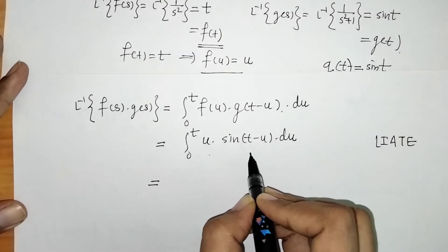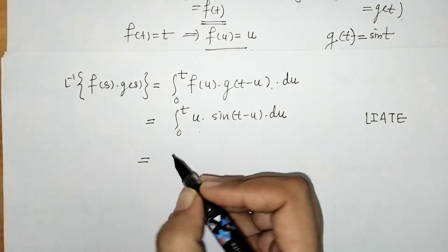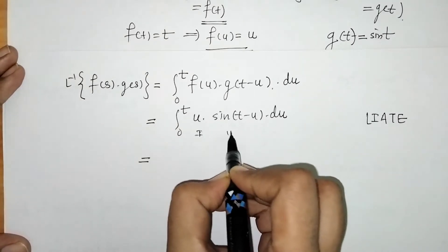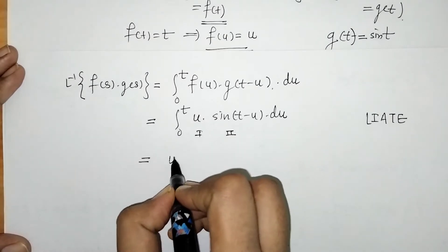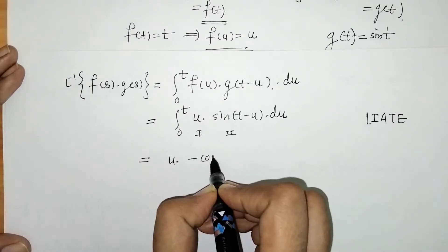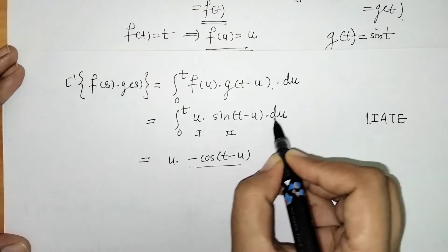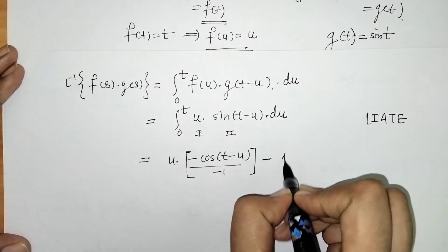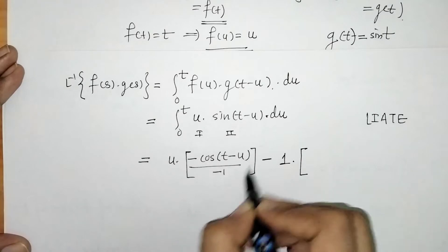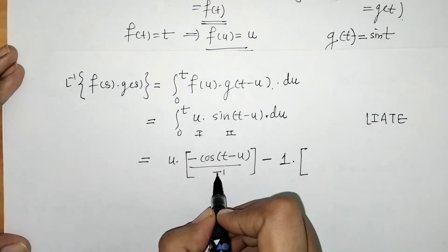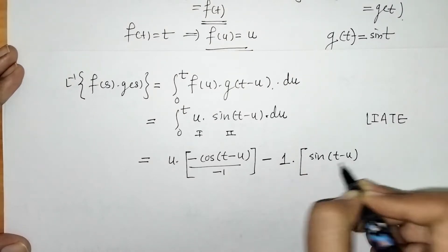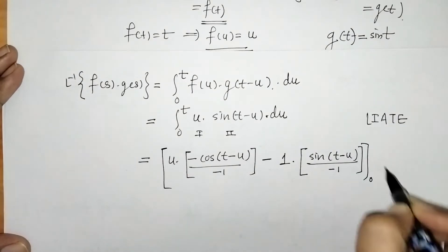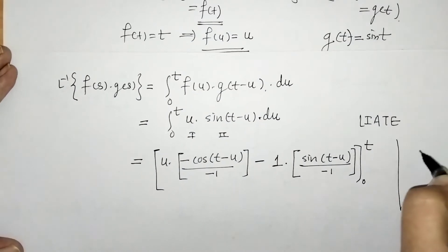We apply the generalized rule of integration by parts. The first function is u and the second is sin(t - u). So we get: u times the integral of sin(t - u), which gives u·cos(t - u)·(-1) = -u·cos(t - u). Then minus the derivative of u times the integral of cos(t - u), giving +sin(t - u). This is evaluated within limits 0 to t.